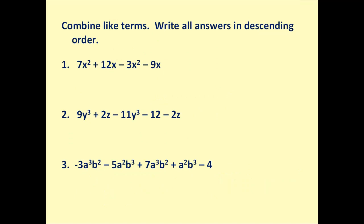So if we want to combine like terms here, step one is to identify the like terms. 7x squared and minus 3x squared have the same variable part. You could almost think of it as the same code. And then we have a 12x and then a minus 9x. Those are also like terms.